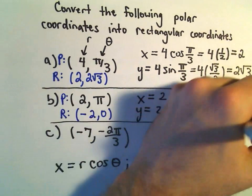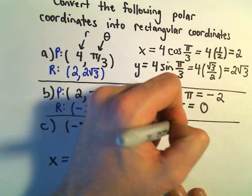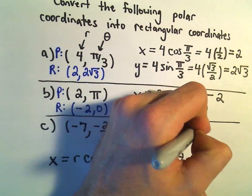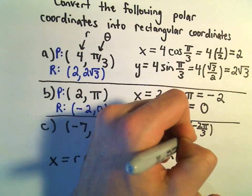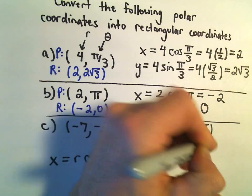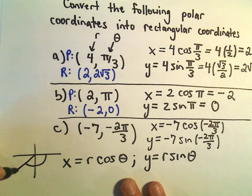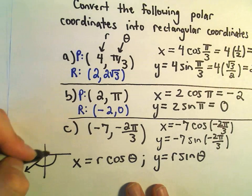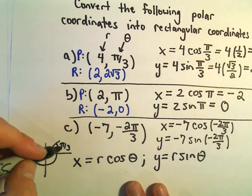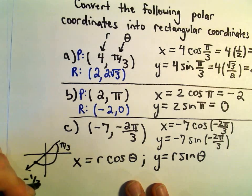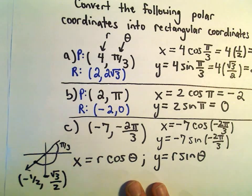Last but not least, we've got (-7, -2π/3). So x will be negative 7 times cosine of negative 2 pi over 3, and y is going to be negative 7 times sine of negative 2 pi over 3. Negative 2 pi over 3 is going to put us down here in the third quadrant. At pi over 3, cosine is 1 half, so down here in the third quadrant we'll get negative 1 half, and sine will also be negative — we'll get negative root 3 over 2.